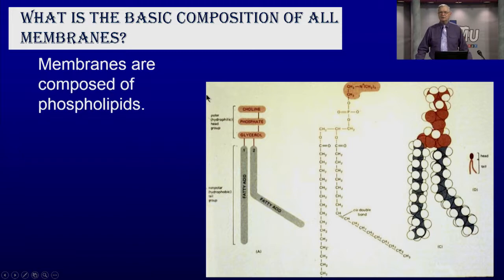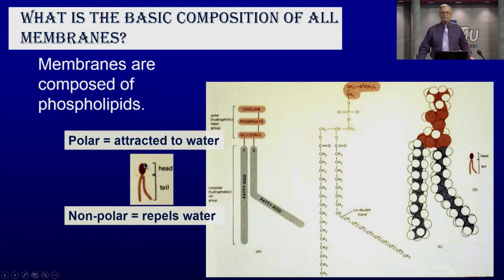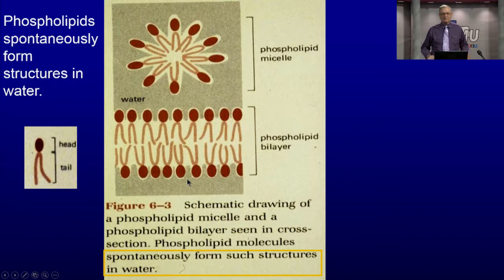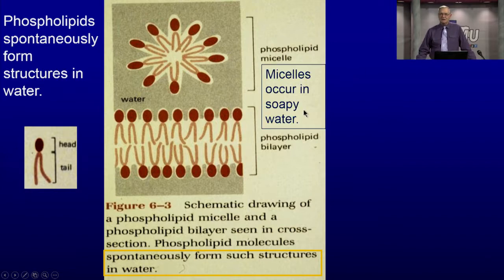Cell membranes are composed of phospholipids. A phospholipid has a head and tail — the head loves water, and the tail hates water and repels it. If you take these phospholipids and put them in water, they will make a micelle, because the tails are running from the water. You can also make a membrane — like the cell membrane — as a bilayer: two layers make a membrane.